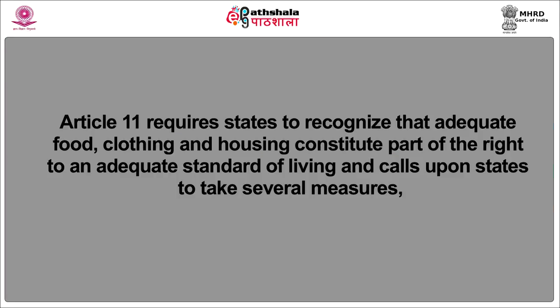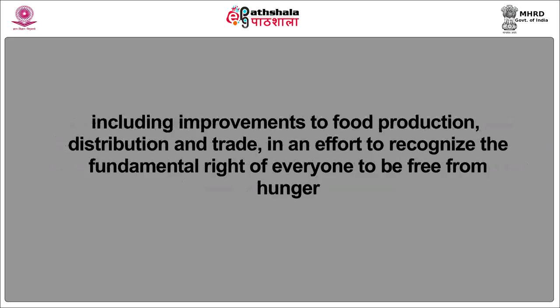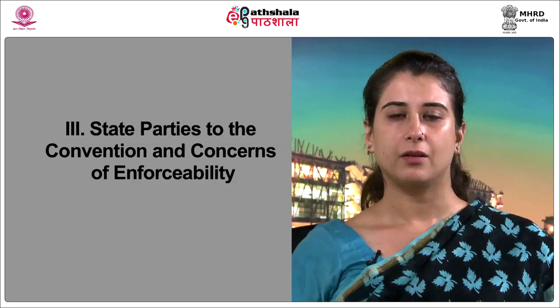Each of these rights is phrased in broad terms. For instance, Article 10 protects not only the freedom to marry who one chooses but extends special protection to mothers during a reasonable period before and after childbirth and to children who are to be protected from economic and social exploitation. Article 11 requires states to recognise that adequate food, clothing and housing constitute part of the right to an adequate standard of living, and calls upon states to take measures including improvements to food production, distribution and trade in an effort to recognise the fundamental right of everyone to be free from hunger.